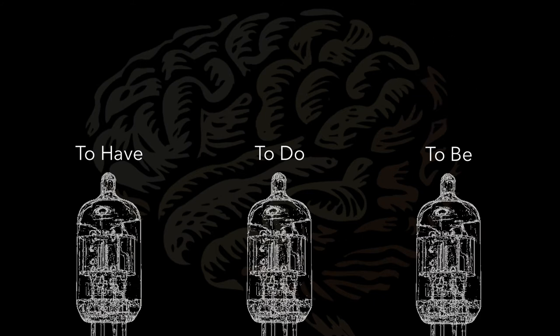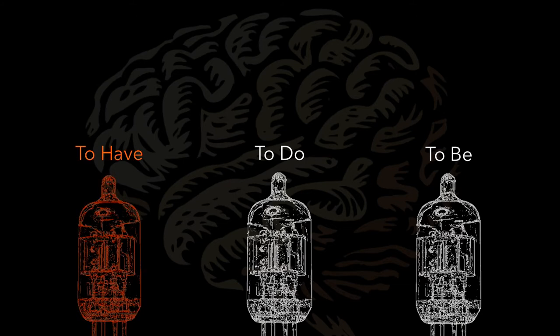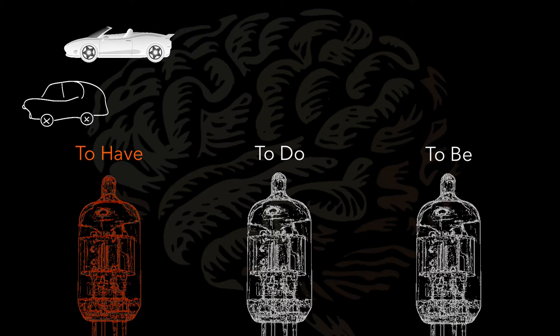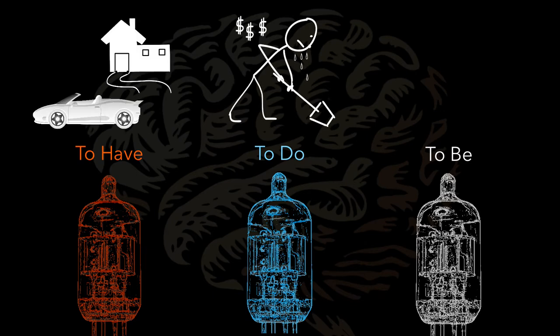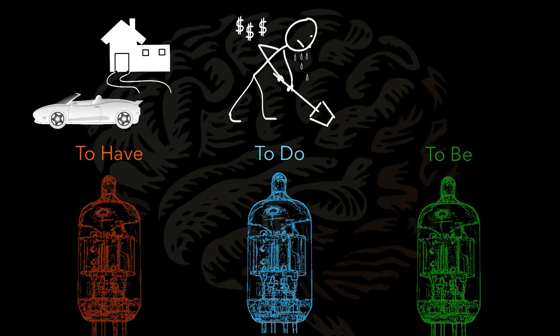Mostly, our to-have valve lights up first and makes us want more and more material possessions. This desire valve then leads to the heating up of the to-do valve and spurs us to action. We tell ourselves that once we have adequate material possessions, we will then fire up our to-be valve.